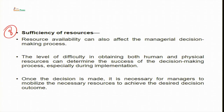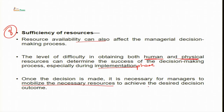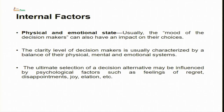The third external factor is sufficiency of resources. The resources available can also affect managerial decision making. The level of difficulty in obtaining both human and physical resources can determine the success of the decision making process, especially during the implementation phase. Once a decision is made, managers must mobilize the necessary resources to achieve the desired outcome. Insufficiency of resources will hamper the decision making process.